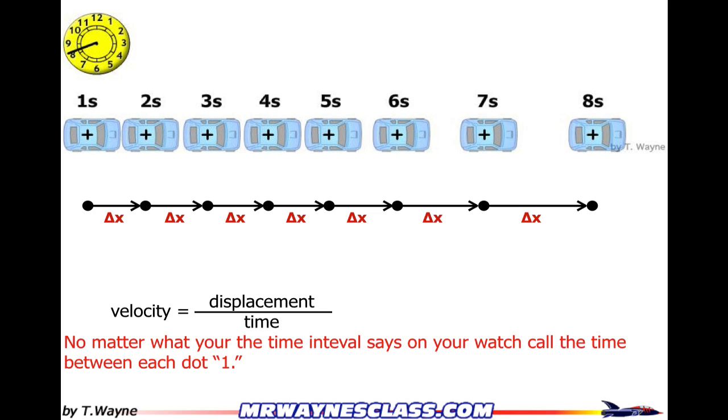Velocity is equal to the displacement, which is the delta x, over time. Now, these are equal time intervals, so I'll call whatever the time interval is a one, one tick of time. So the displacement divided by one tick of time is a velocity. So each one of these is actually a velocity vector, as well as a delta x vector in this case.